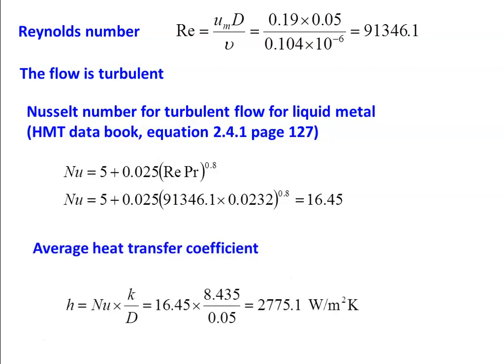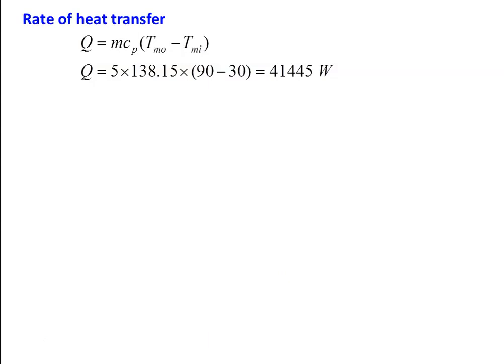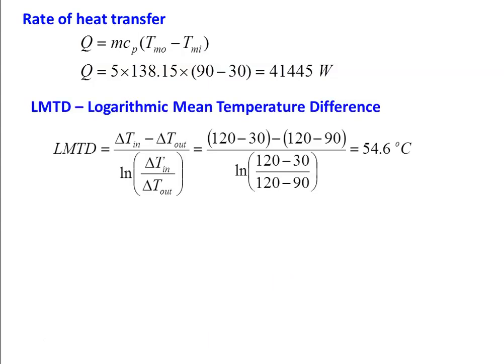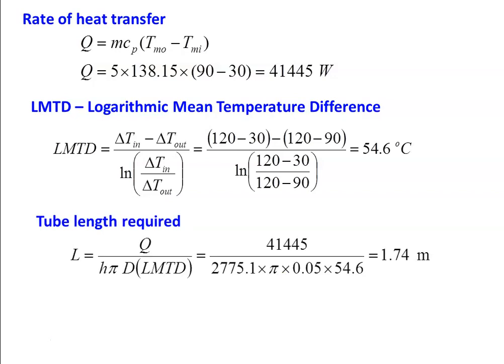Average heat transfer coefficient: h = Nu × k/D = 16.45 × 8.435 / 0.05 = 2775.1 W/m²·K. Heat transfer: Q = m·Cp·(TMo − TMi) = 5 × 138.15 × (90 − 30) = 41,445 W. LMTD = (120−30 − 120−90) / ln((120−30)/(120−90)) = 54.6°C. Tube length required: L = Q / (h × π × D × LMTD) = 41,445 / (2775.1 × π × 0.05 × 54.6) = 1.74 m.